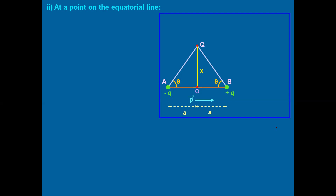The direction of an electric field is towards a negative charge and away from a positive charge. So the direction of Ea will be pointing towards point A because the charge there is negative. The direction of Eb will be away from point B. Since these two vectors make an angle of 2θ between them, we can find the resultant using the parallelogram law of vector addition, and the resultant vector will be along the diagonal of the parallelogram. The direction of the net electric field Eq goes from right to left, and when you compare this with the direction of the dipole moment p, they are in the opposite direction.